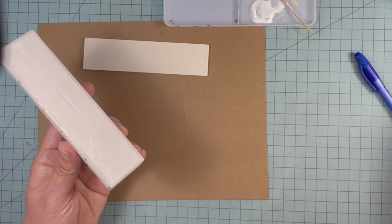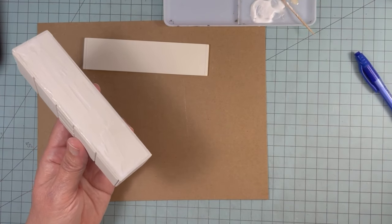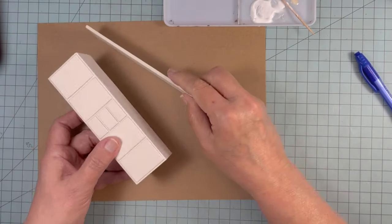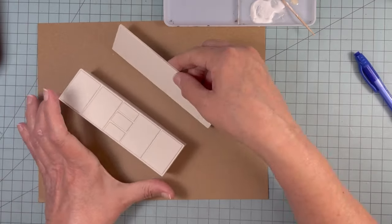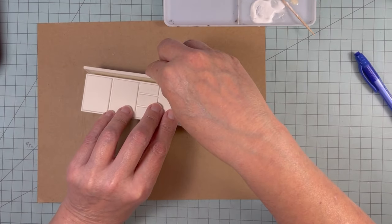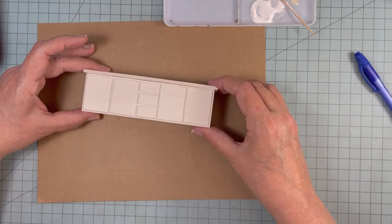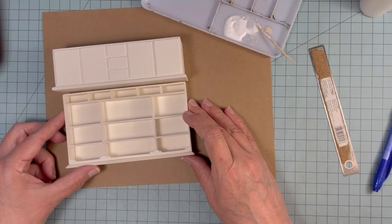This top piece I made eight layers thick instead of four, because it's kind of like the counter top. Now it's time to glue the top to the bottom.